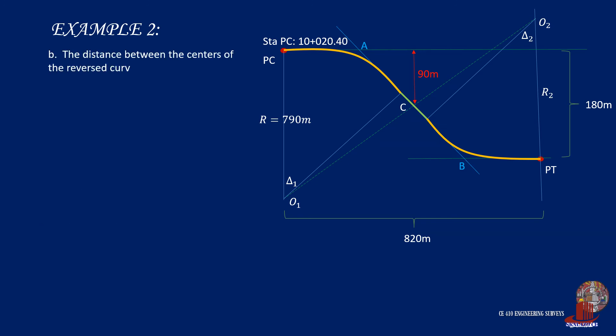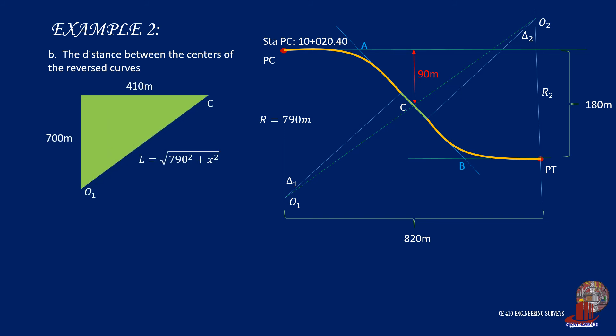The distance between the centers of the reverse curves is taking twice of the length L, so by plugging computed values, we can say O1O2 is equal to twice of the root of 790 squared plus 184.39 squared, which can then be simplified as 1622.47 meters.